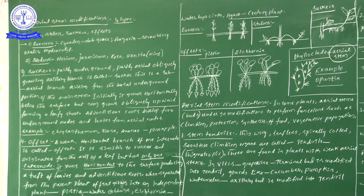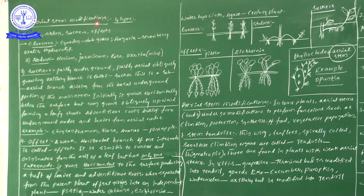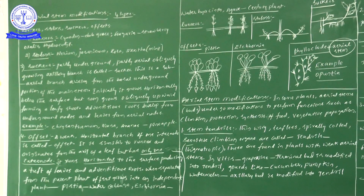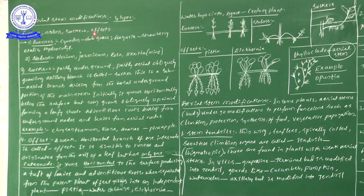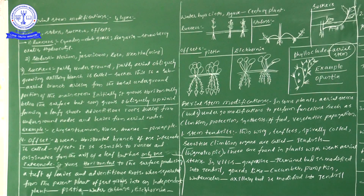Sub-aerial stem modifications — four types: Runners, Stolons, Suckers, Offsets. Try to memorize this order. Runners information: examples are Cynodon, Dubgrass, Fragaria (scientific name of Strawberry), Oxalis, and Hydrocotyle vulgaris. These are the examples which come under Runners.